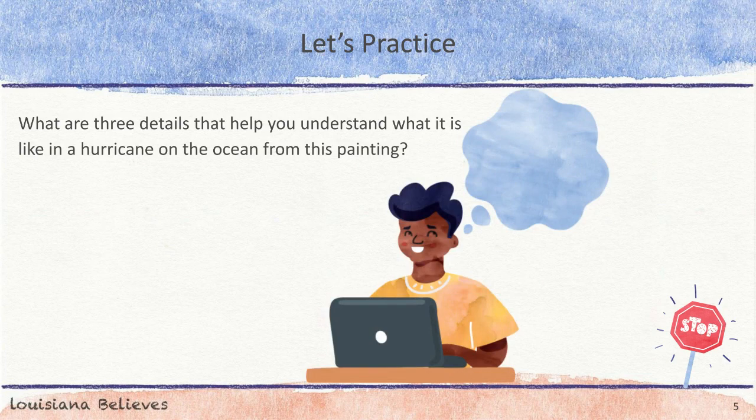Let's look at another piece of art. Look closely for clues created by the artist that would tell you more about what it was like to be out in the ocean in a hurricane. Pause this video and answer the question at the first stop sign on your handout. When you are done, hit play to continue.